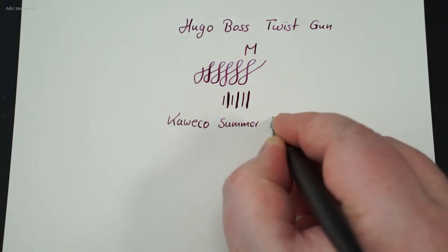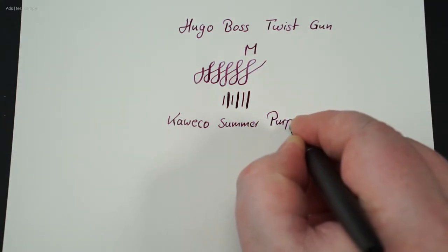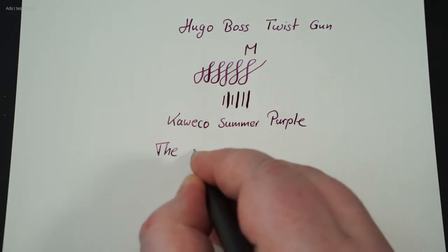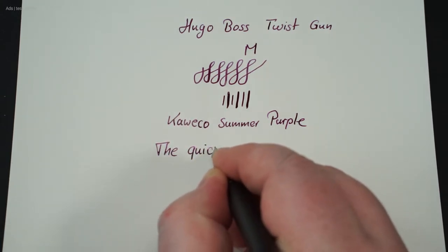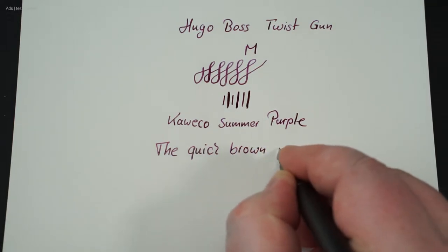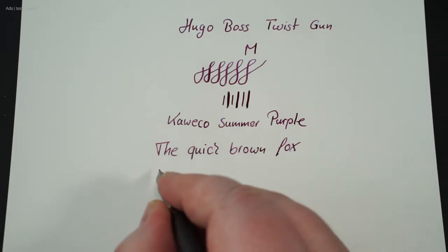Some people prefer nibs that are rigid, so they produce almost no line variance. I prefer nibs that can be flexed a bit. But that also depends a bit on my mood.